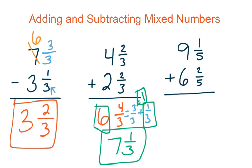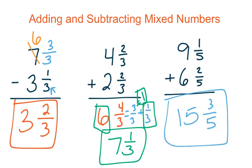And the last problem: 1 fifth plus 2 fifths gives me 3 fifths, and 9 plus 6 gives me 15. There's nothing extra I need to do — I don't have a fraction greater than 1 and I didn't need to do any borrowing. My final answer is 15 and 3 fifths.